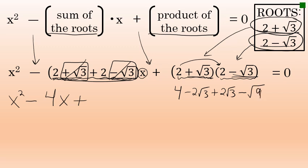Simplifying this product, as is always the case when multiplying conjugates, negative 2 root 3 plus 2 root 3 is 0. So this product becomes 4 minus the square root of 9, which is 3, and 4 minus 3 is 1. So the product of the roots, 2 plus the square root of 3 times 2 minus the square root of 3, turns out to be simply 1.